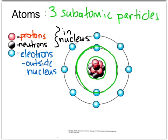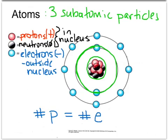Not only is the placement of where they're found important, but additionally the charges on each of these subatomic particles. Our protons are positively charged, and our neutrons are neutral — they do not have a charge. The overall charge of the nucleus, then, is always positive. However, when looking at the whole atom, our electrons are negatively charged. The electrons and protons determine the overall charge of an atom. For an atom, the number of protons is equal to the number of electrons, so the overall charge is zero.